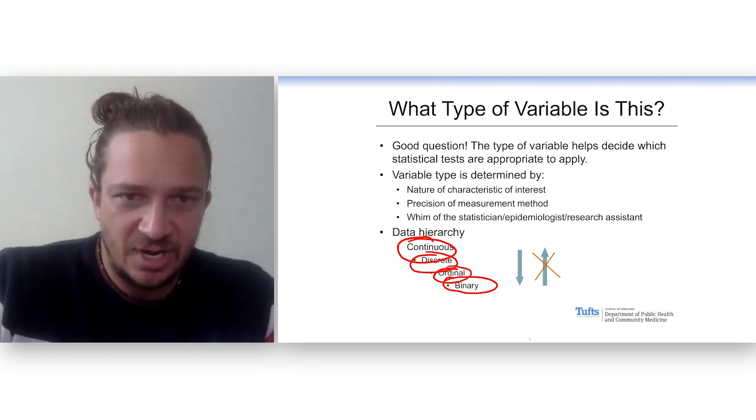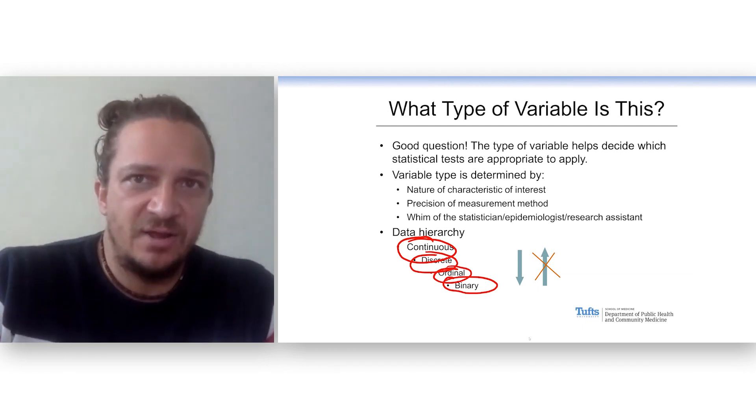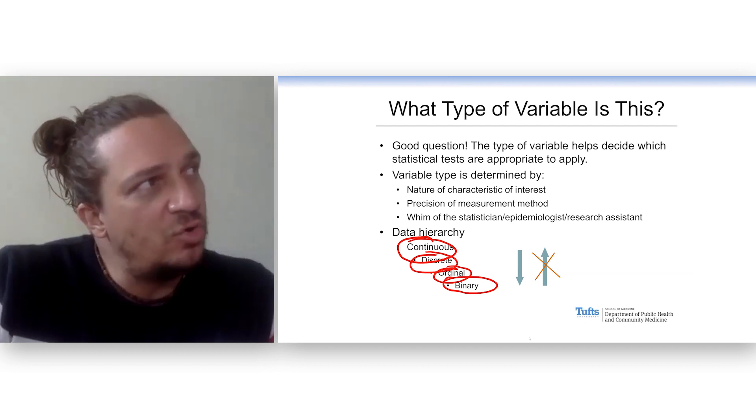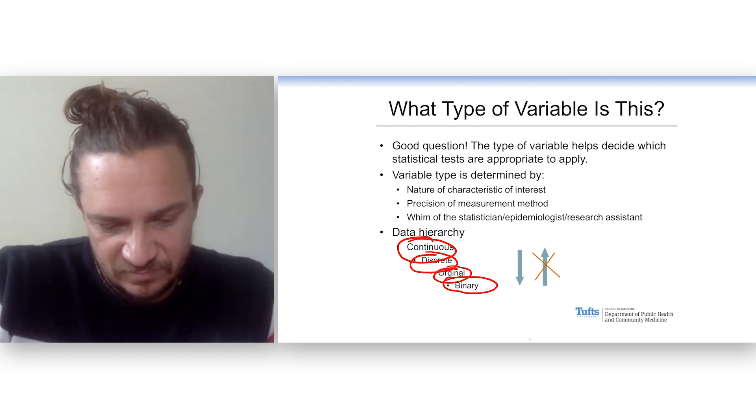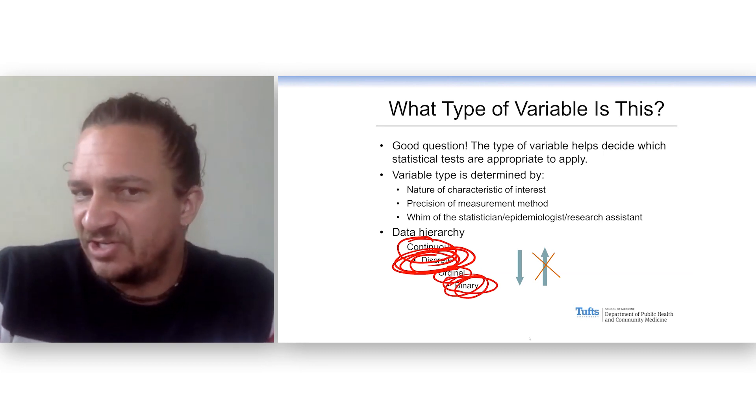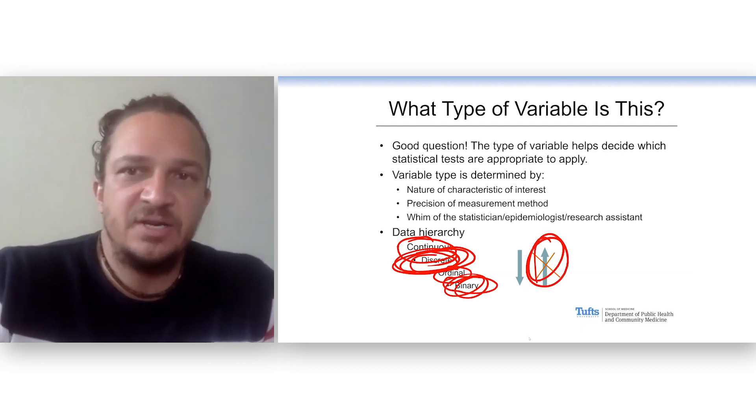And we can always move our data down this hierarchy. If I told you that I had a friend who was 72 years old, discrete right? Is that person a senior citizen? Yes or no? What are you going to say? Yes. But if I told you I had a friend who was a senior citizen, how old is he? You don't know. You can't go back up that scale.